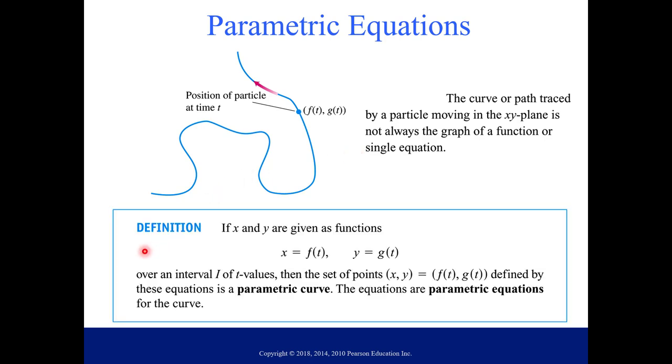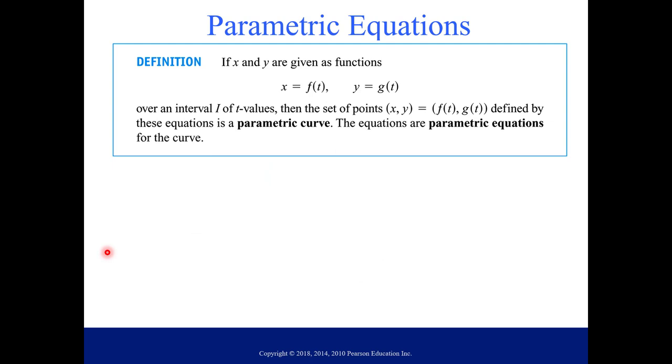Here is our parametric equations definition. x and y are given as functions, so notice f(t) is our x value, g(t) is y, and then it's over some interval i for t values. Then the set of points in our xy-plane are equal to (f(t), g(t)), defined by these equations. This is called a parametric curve, and the equations are parametric equations for the curve.